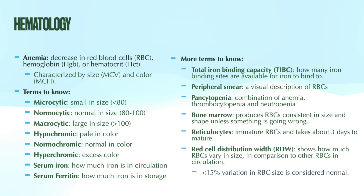A low hemoglobin concentration and/or a low hematocrit are the parameters most widely used when diagnosing anemia. There are some variations in lab value cutoffs, but the most widely used are: females with a hemoglobin less than 11.9 or a hematocrit less than 35%, and males with a hemoglobin less than 13.6 or a hematocrit less than 30%.